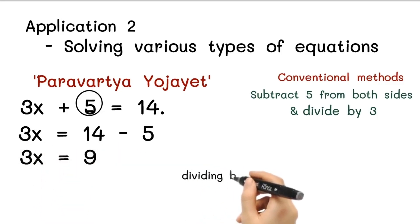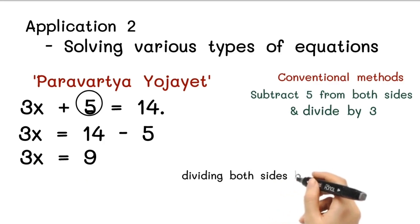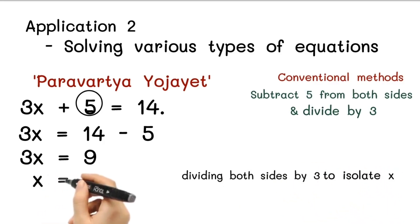Next, we apply the operation of dividing both sides by 3 to isolate x. So we get x equals 9 divided by 3, which is x equals 3.